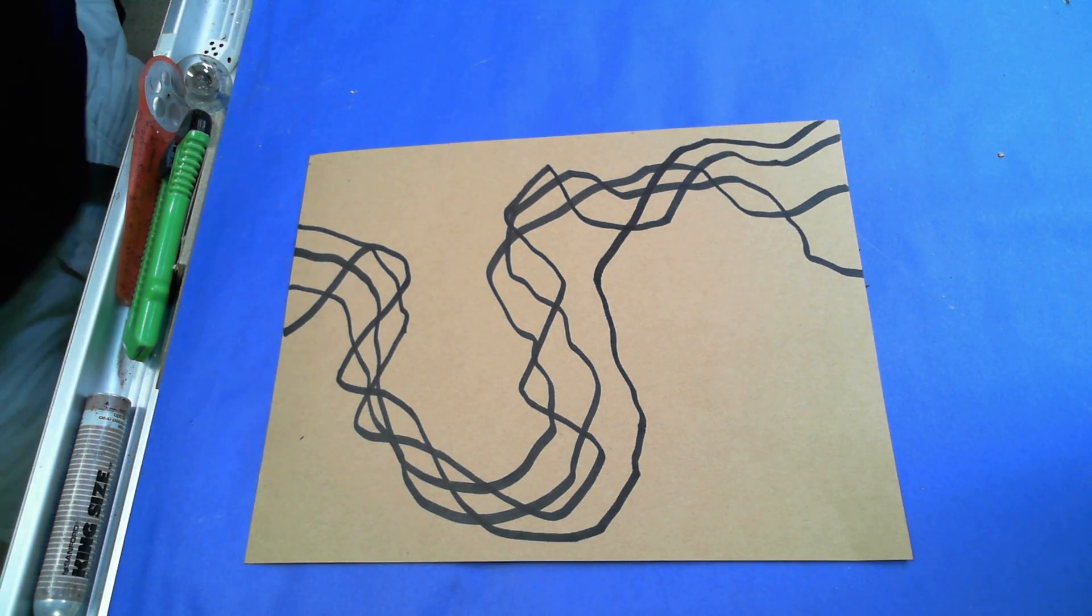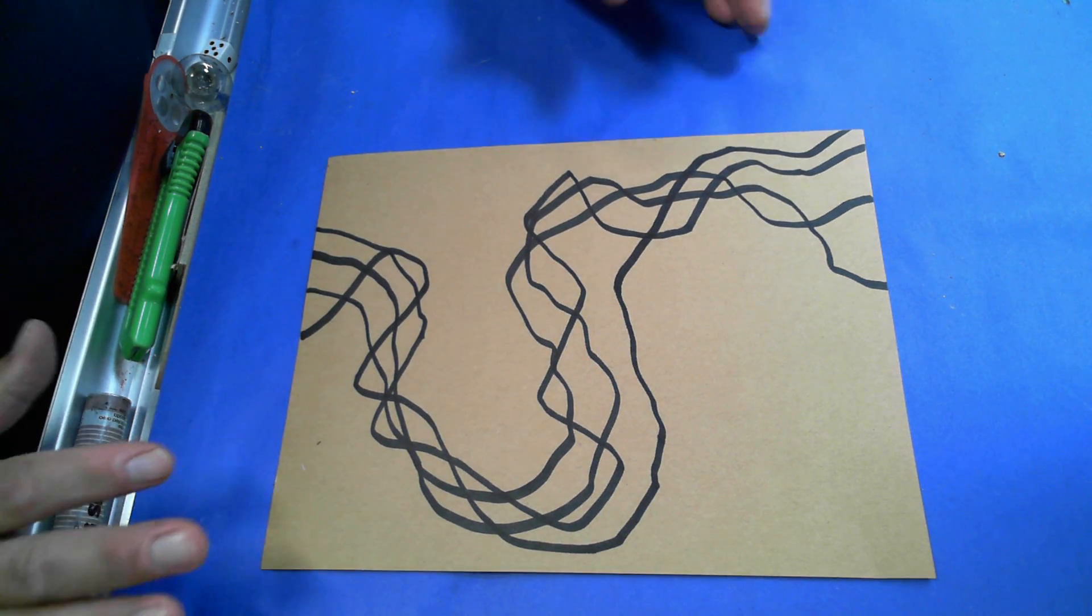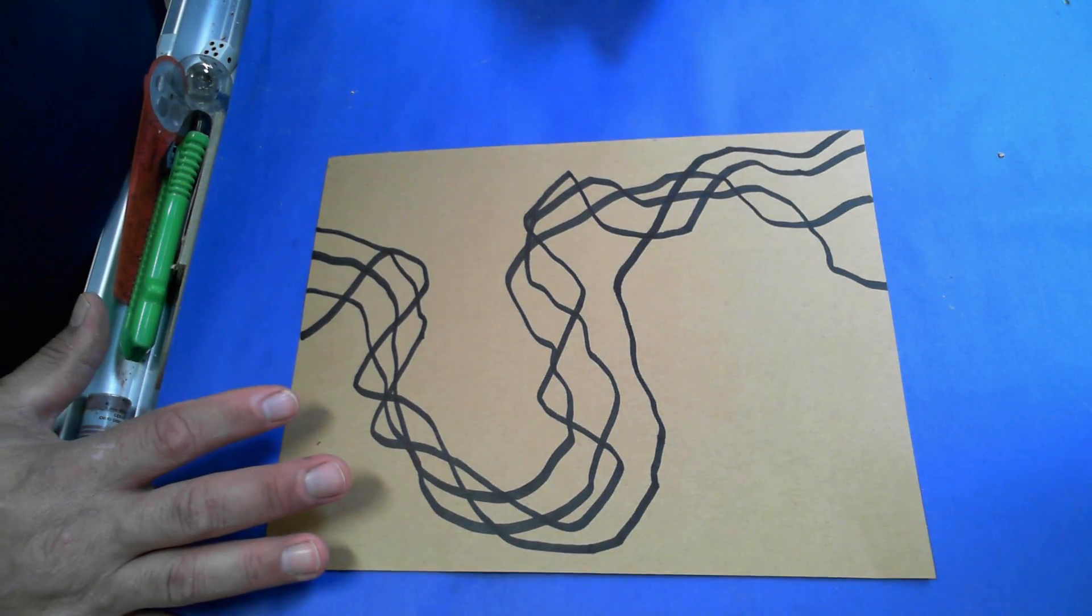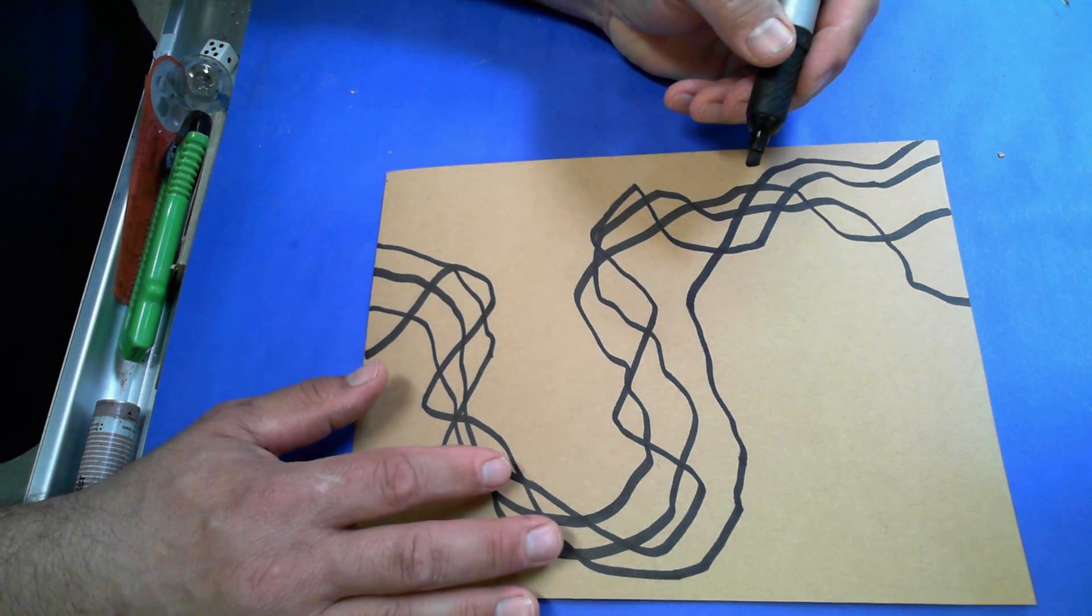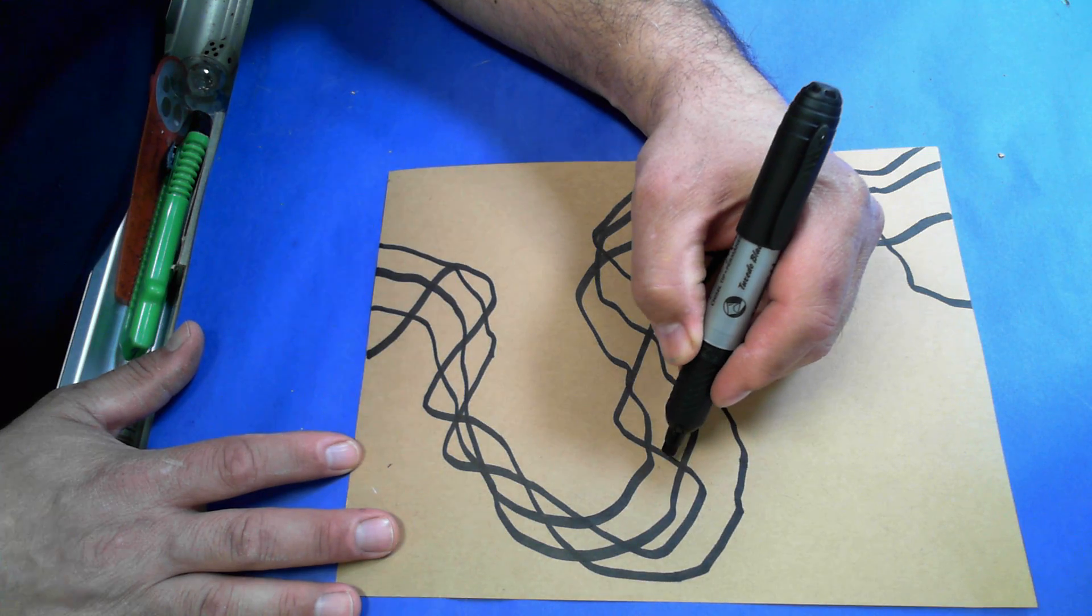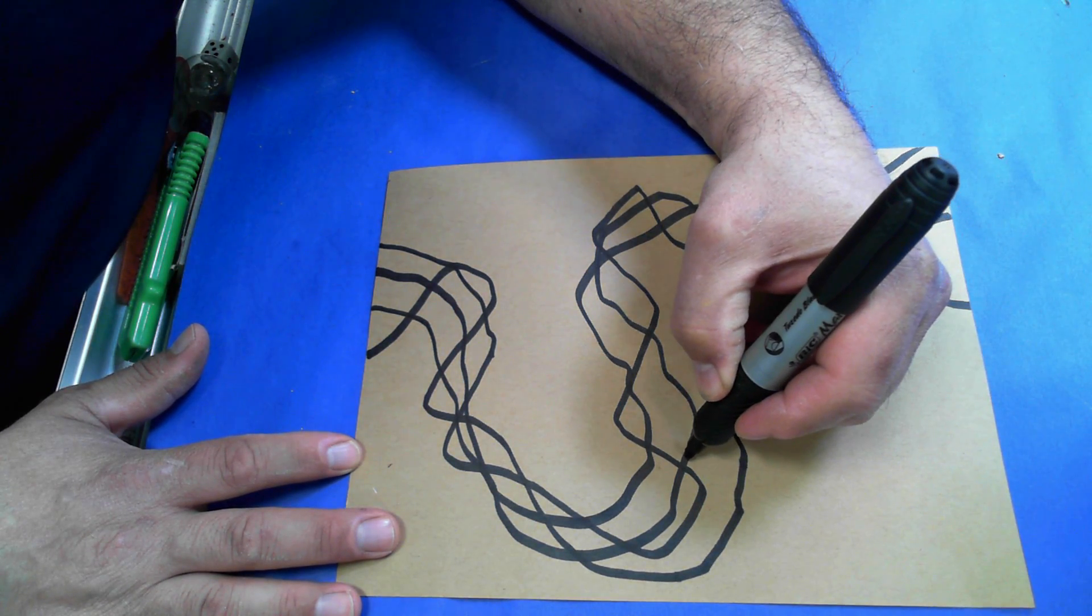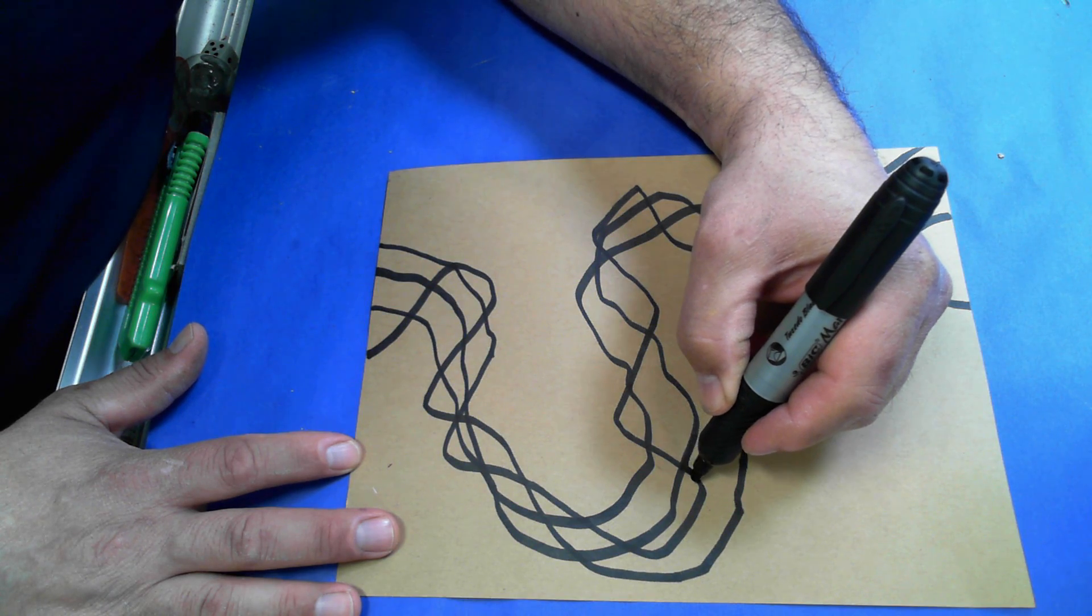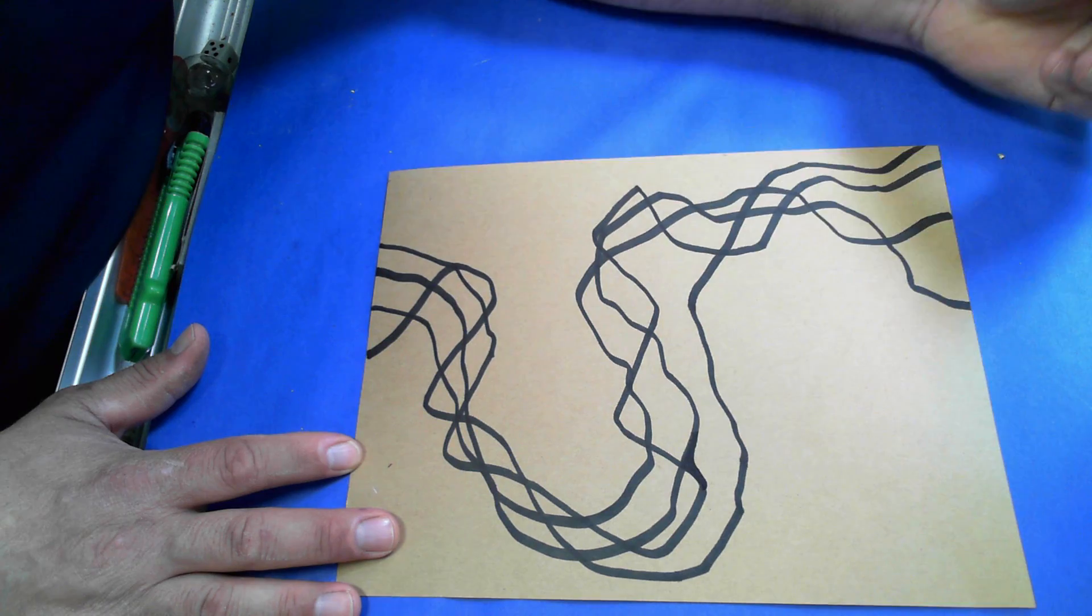All right, so I've made a series of four lines. They're wooggedy, they go through at weird angles and whatnot. But now I'm going to do something called create nexuses. So where the line crosses right here, I am going to imagine I'm riding my bike down. And instead of stopping at the corner and taking a right, I'm going to round the corner off like I do on a bike.